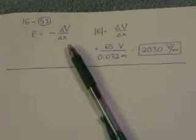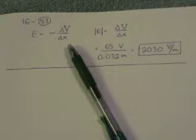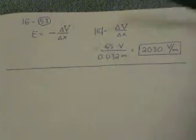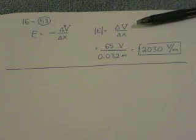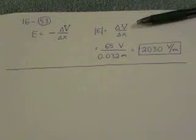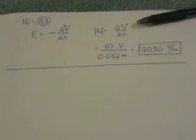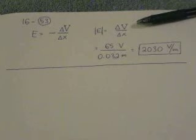So the electric field is given by the voltage difference divided by the distance between the plates. There's a negative sign in there. The negative sign just refers to which way the electric field points in relation to which way the voltage drops. The question is asking for the magnitude of the electric field, so we really don't care about that negative sign. So I'll just put, you see right here, magnitude of the electric field, delta v over delta x. Plug in those numbers, and you get 2,030 volts per meter.